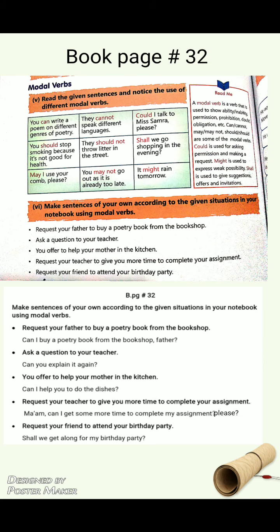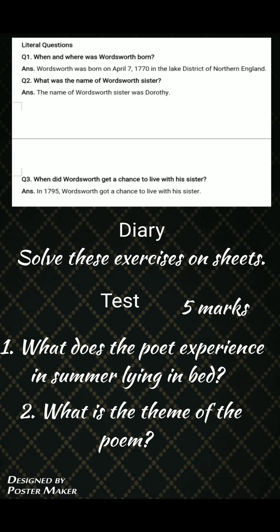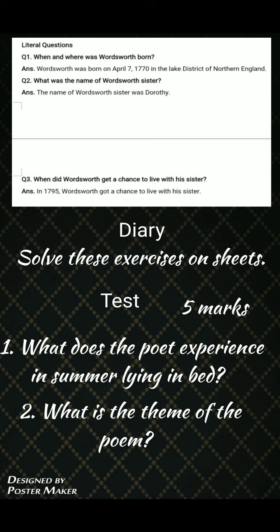There are also some literal questions on book page number 33. Literal questions are those whose answers you can find directly in the text — no concept application is needed. For example: 'When and where was Wordsworth born?' — He was born on April 7, 1770, in the Lake District of Northern England. 'Who was the sister of Wordsworth?' — Her name was Dorothy. 'When did Wordsworth get a chance to live with his sister?' — In 1795. You have to solve these exercises on sheets.